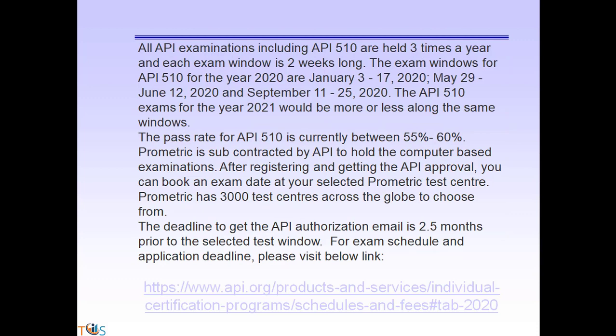All API examinations, including API 510, are held three times a year, and each exam window is two weeks long. The exam windows for API 510 for the year 2020 are January 3–17, May 29–June 12, and September 11–25. The API 510 exam for 2021 would be along the same windows. The current pass rate for API 510 is between 55 and 60 percent.